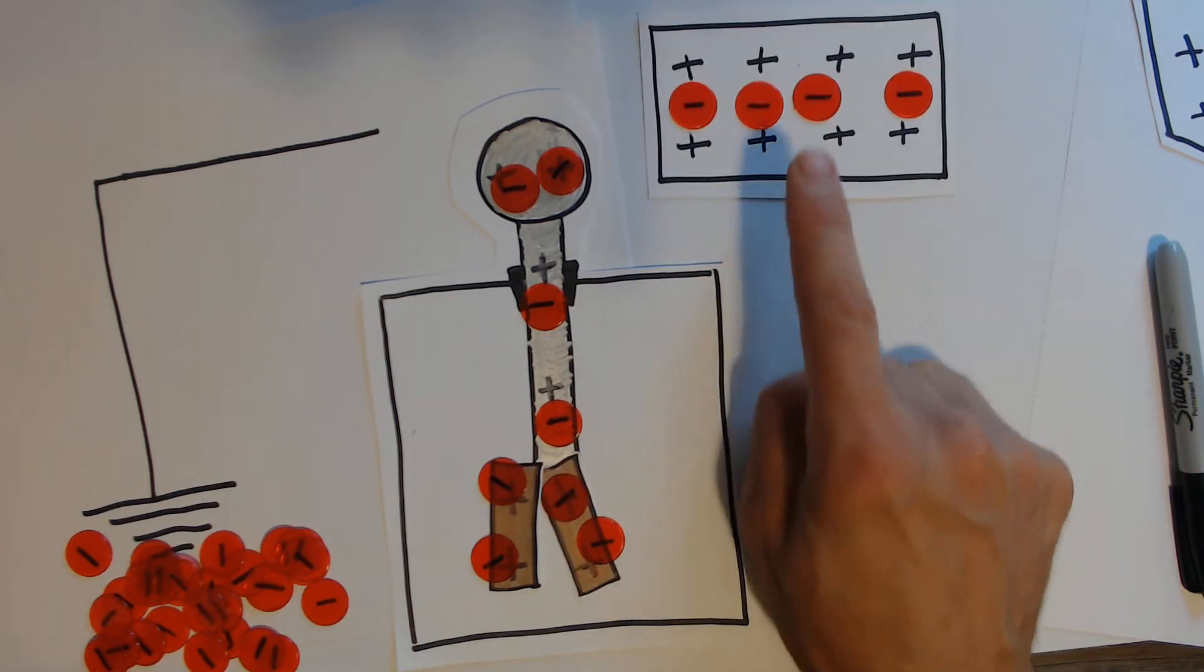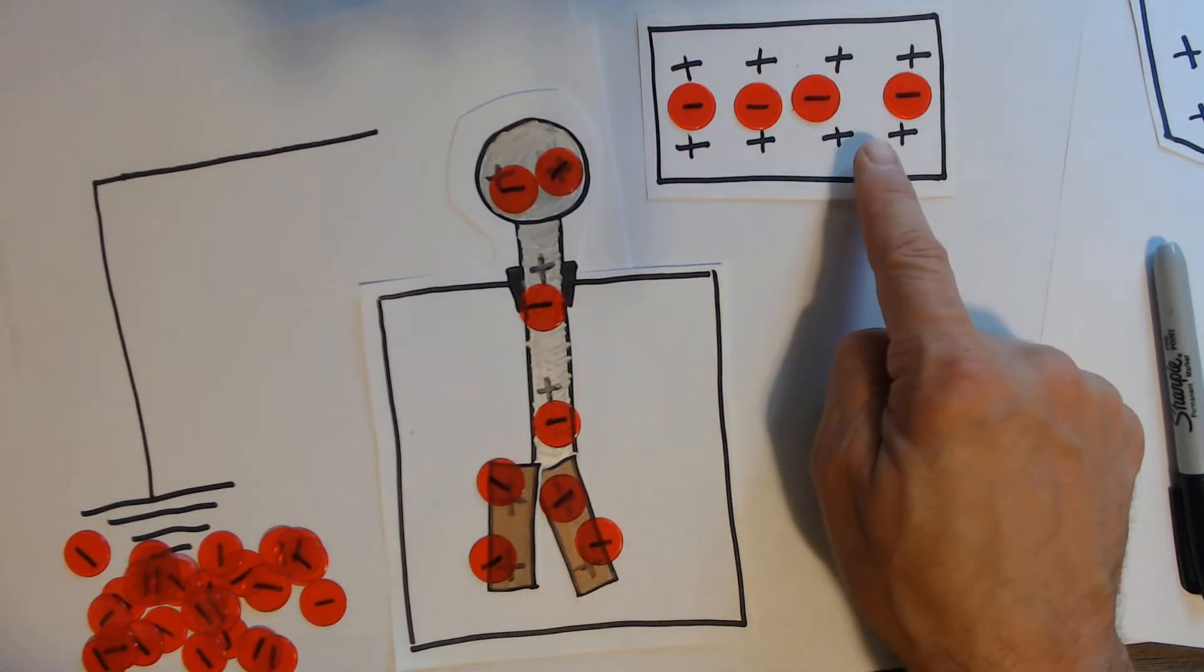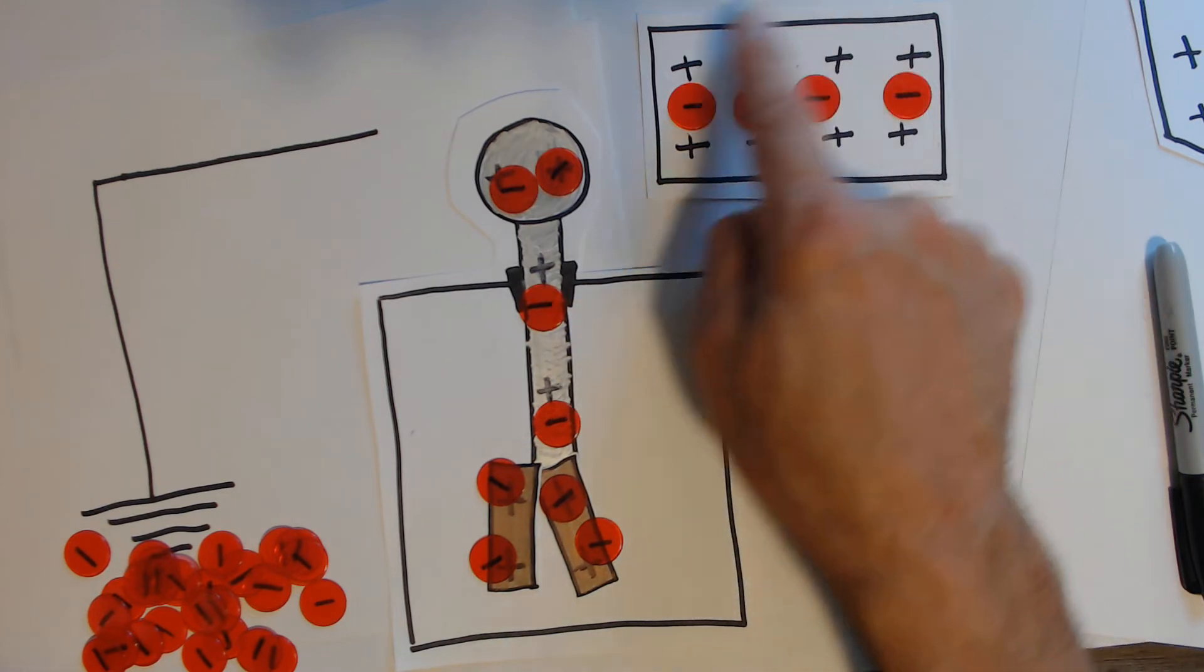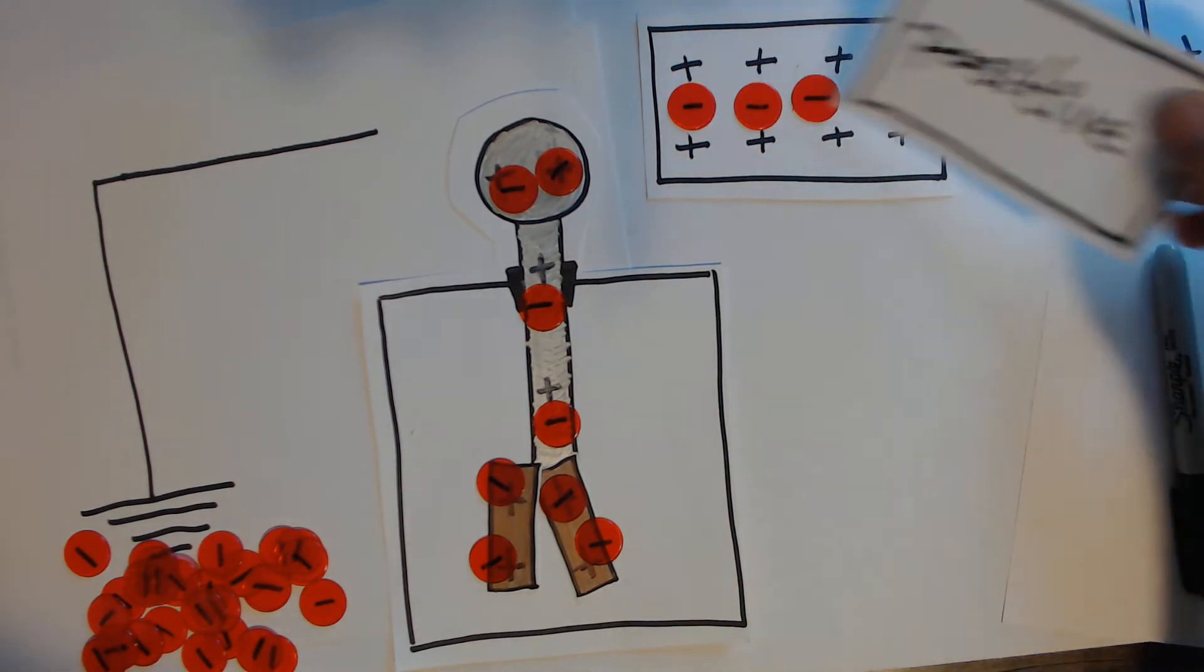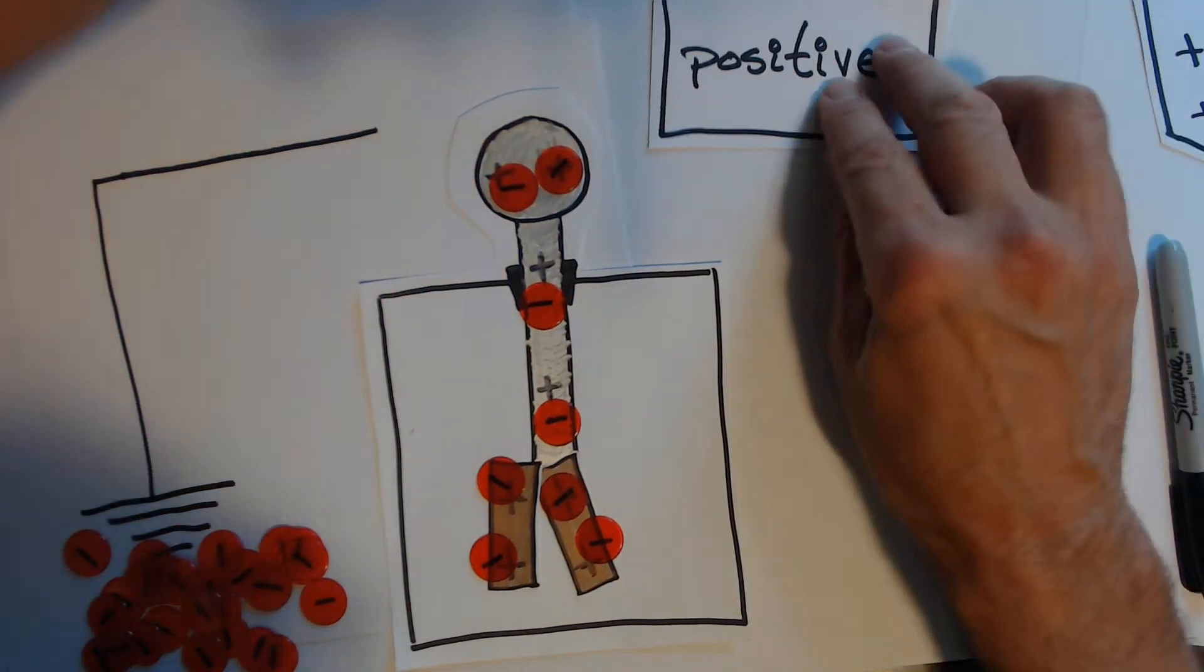We know that charging by induction gives us the opposite, so if this starts off as positive, this is going to end up negative. And again nothing's going to happen here, so instead of actually keeping track of the four electrons here that aren't going to go anywhere, I will say that here's my positive object.